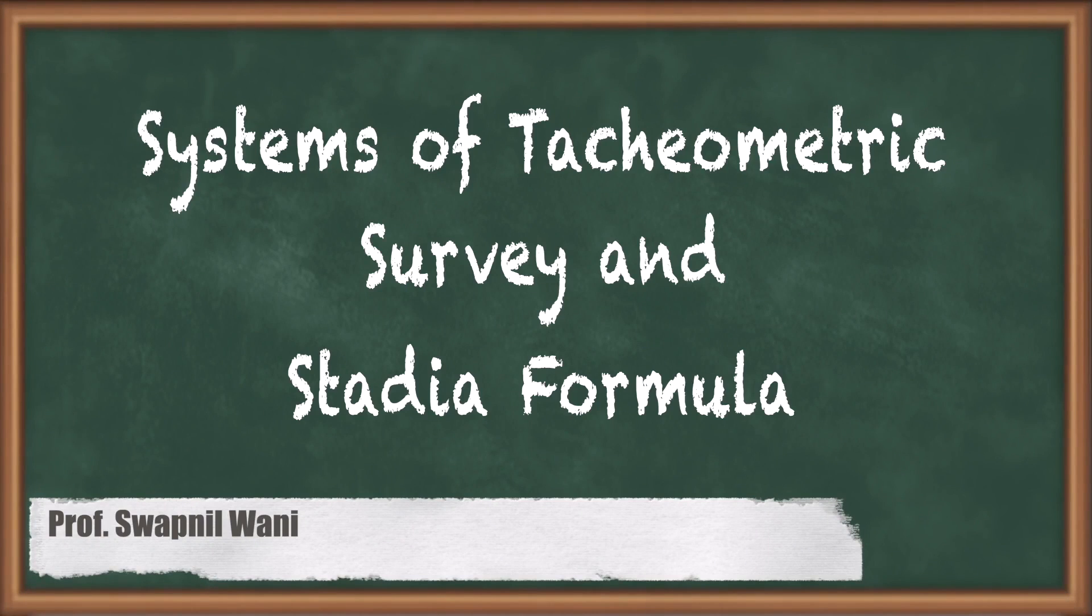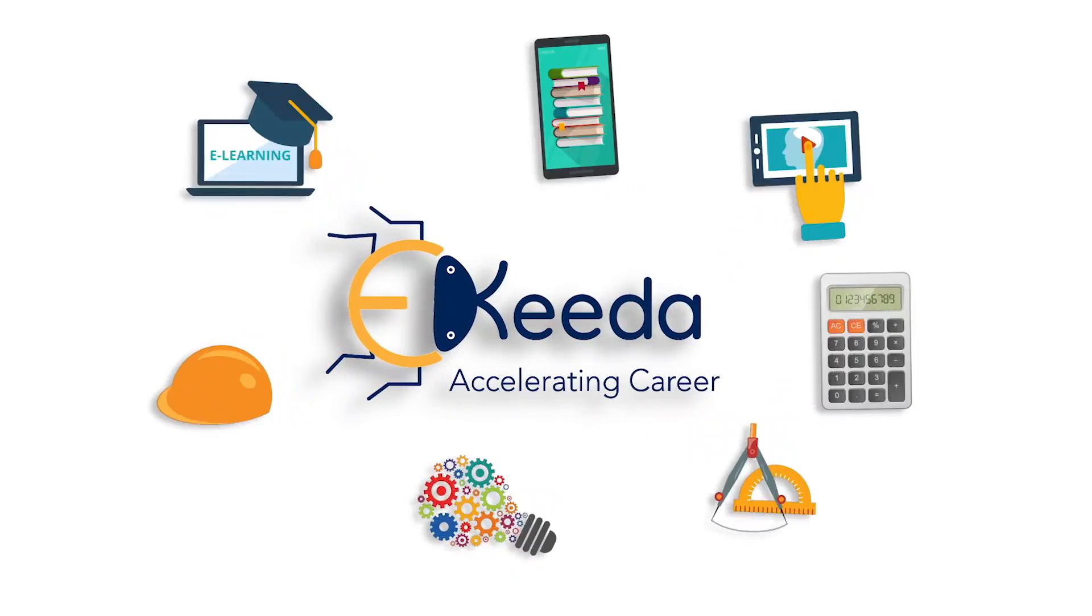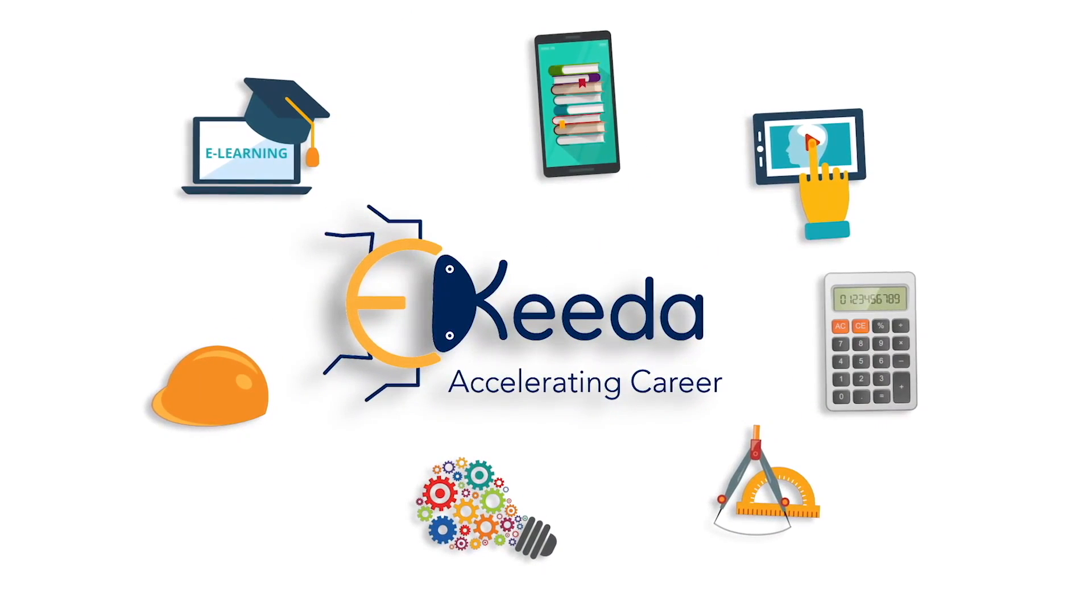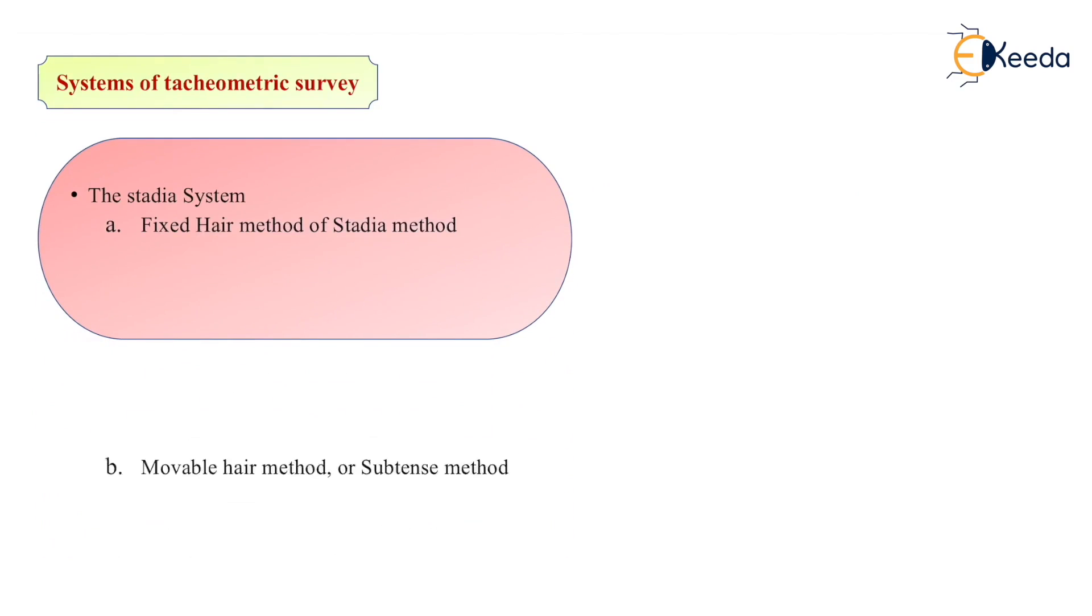Hello friends, in this video we are discussing systems of tacheometric survey and stadia formula. What are the different systems of tacheometric survey? There are two main systems: fixed hair method and second is movable hair method, also known as subtense method.